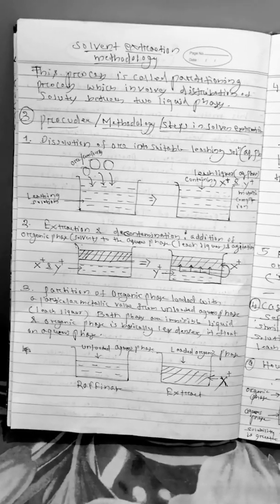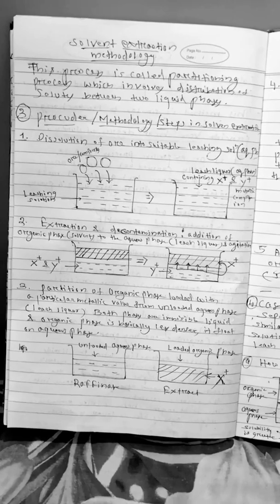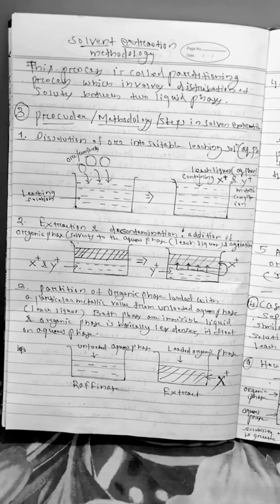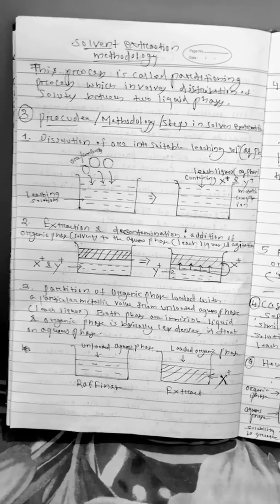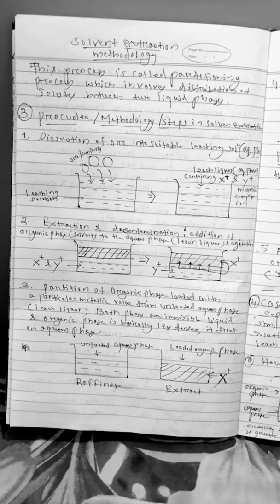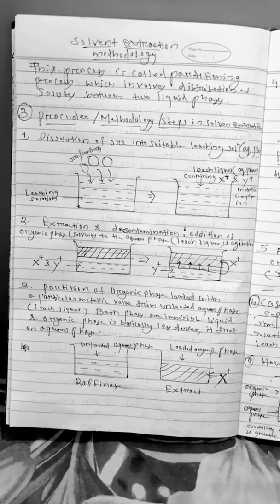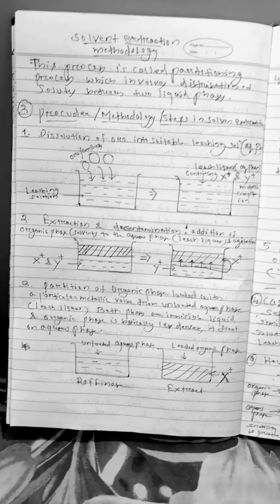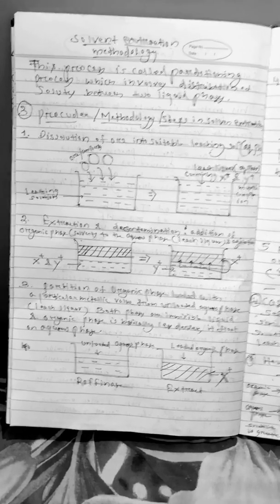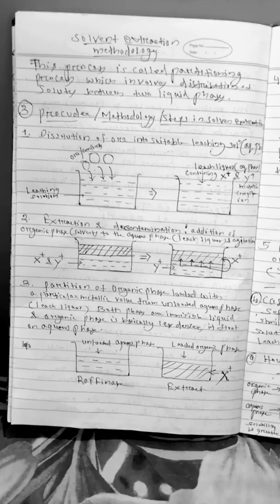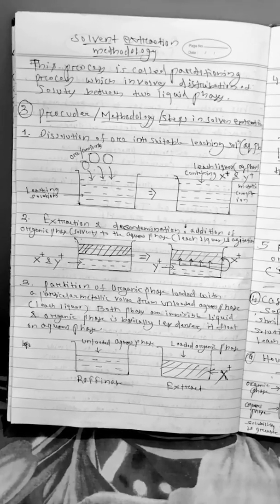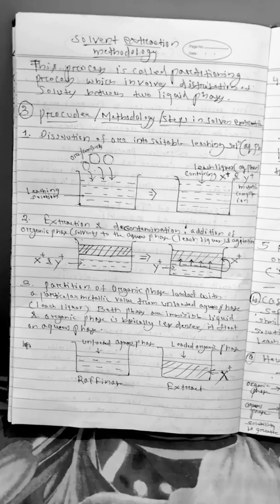The next step is the extraction and decontamination. Here we take the leach liquor and we add the organic phase or the organic solvent to this aqueous phase and we do mixing or we do agitation. So during this process a particular metallic value will get soluble into the organic phase leaving behind other metallic values in the aqueous phase.